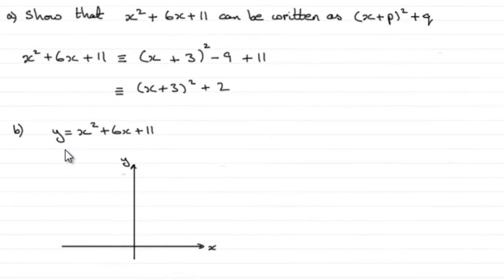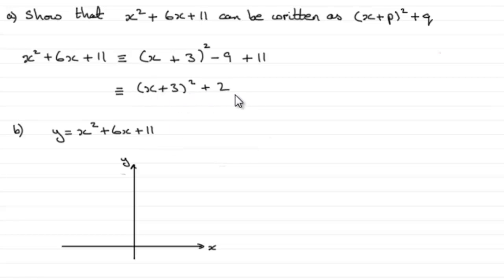For part B, we're asked to sketch the graph y equals x squared plus 6x plus 11. To sketch this, it's very easy because all you've got to do is use the equivalent completed square version of y equals x squared plus 6x plus 11, which we found in the previous part.